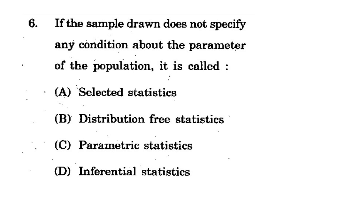If the sample drawn does not specify any condition about the parameter of the population, it is called what? Options: selected statistics, distribution-free statistics, parametric statistics, or inferential statistics. The correct option is B - distribution-free statistics - because no condition has been specified under any parameter for drawing the sample from the population.